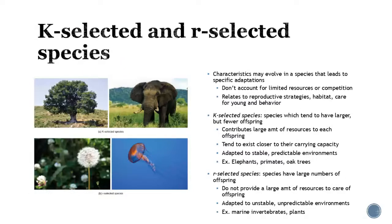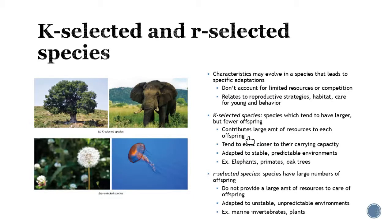Another topic in this section is how species adapt to specific reproductive strategies, looking at habitat and how they care for their young. Depending on the type of species, it will fall into either K-selected or R-selected species. K-selected species have larger but fewer offspring, requiring a large amount of resources devoted to each one. Think about an elephant — she'll have one calf and it takes a lot of effort, help from the herd, and many resources to bring that calf to adult age. These species exist closer to their carrying capacity and survive best in stable, predictable environments because a sudden change is harder to adapt to. Humans fall into this category too.